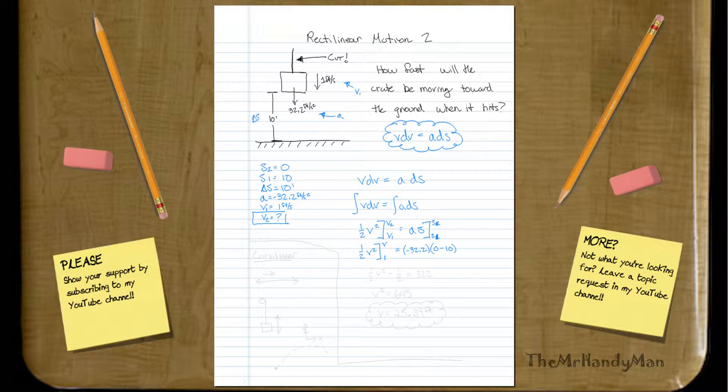Which, when we calculate that all out, you should have 1 half v squared minus 1 half is equal to 322. So then when we calculate that out, when we toss the 1 half on the other side and multiply it by 2, we should have v squared equal to 645.